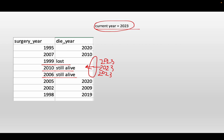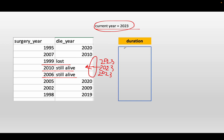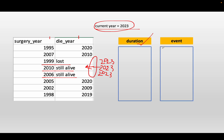Now the surgery year and die year are all represented as specific year numbers, so it is ready for us to calculate the duration. You just use the die year minus the surgery year — the difference between these two columns will be your duration. We also need to look at the event column, which helps us classify the outcome. The event can be one or zero: if a patient died, the outcome is one. If the patient is still alive or lost, we put the event to zero. So we'll have values like 1, 1, 0, 0, 0, 1, 1, 1.